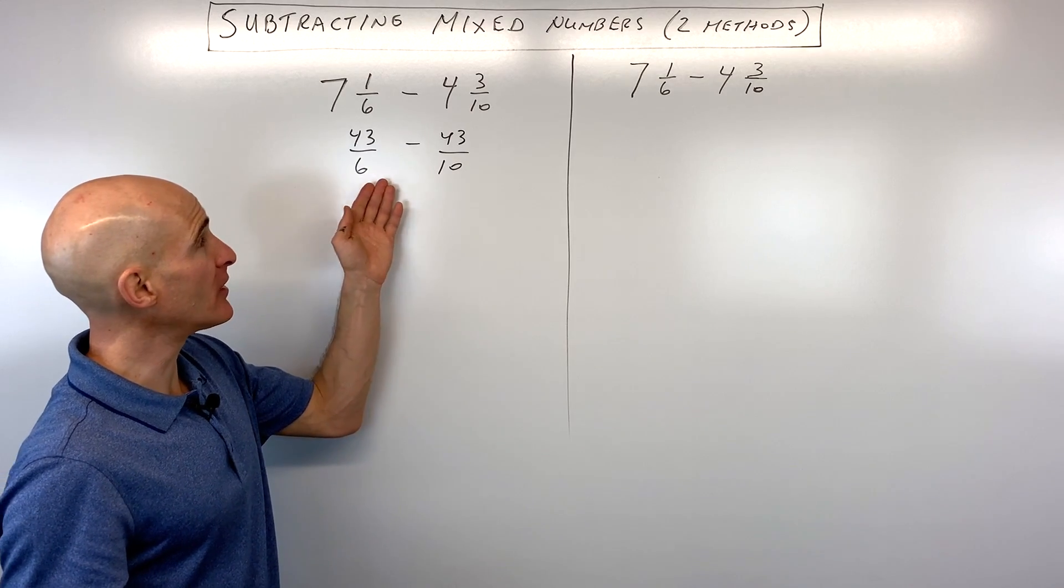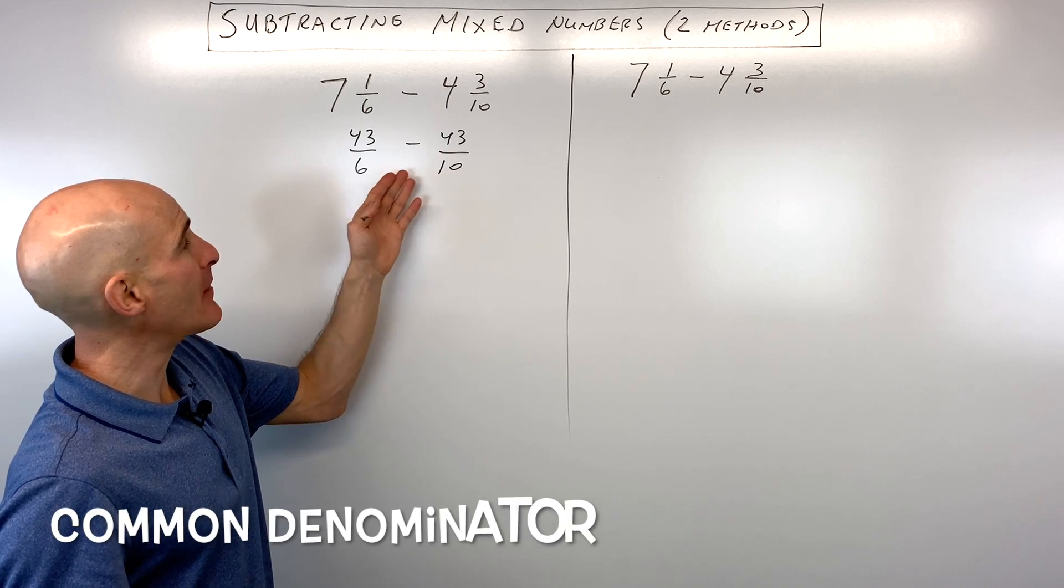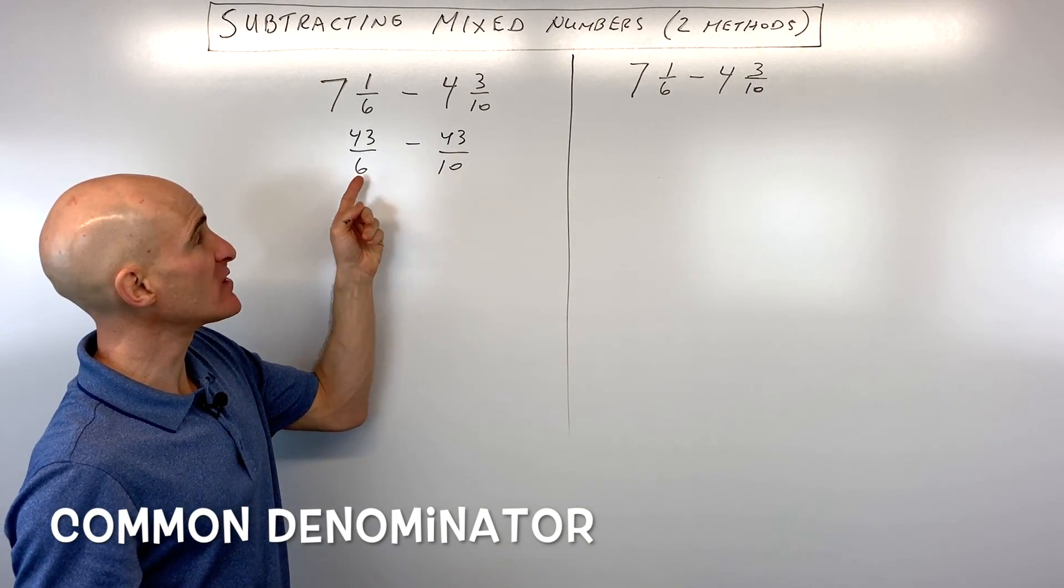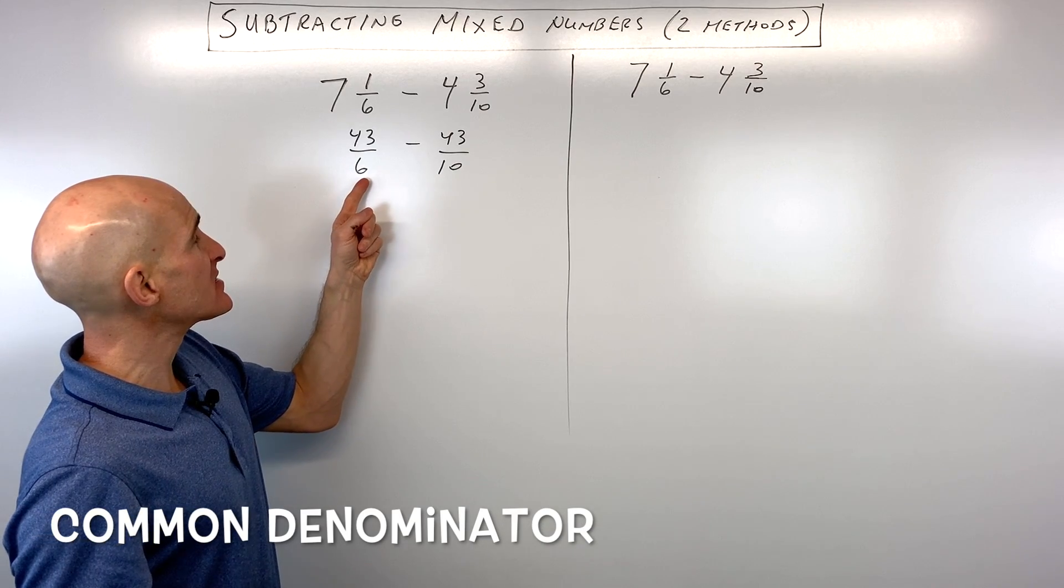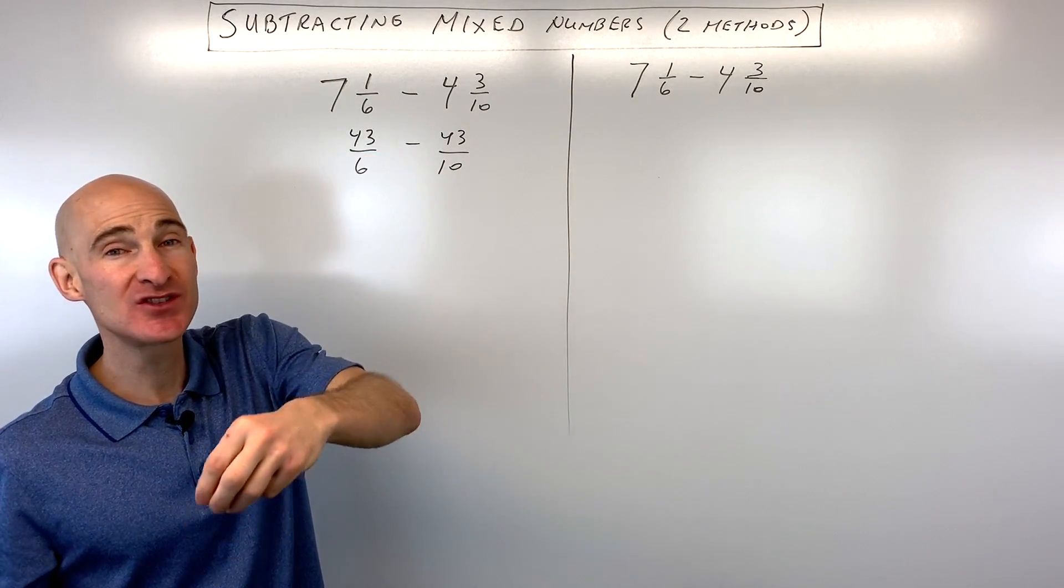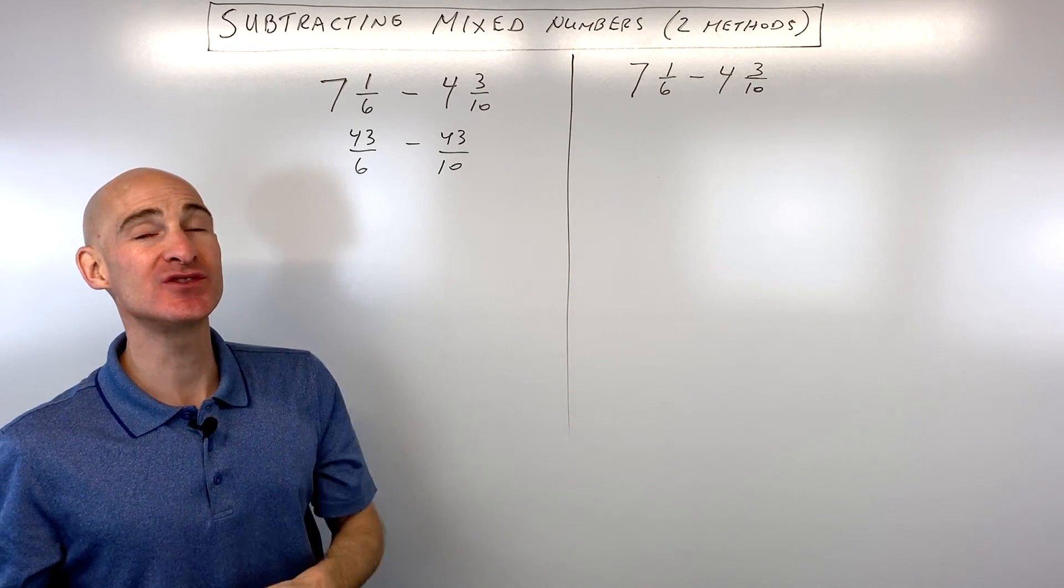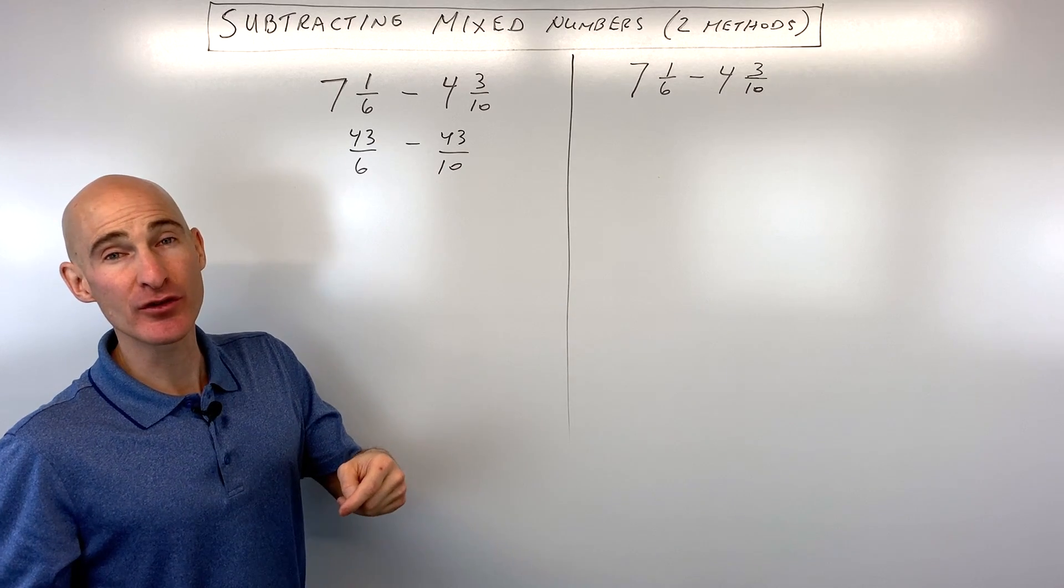So now we have both mixed numbers written as improper fractions. And so what we're going to do is we're going to find a common denominator. So we want this denominator to be the same whenever you add or subtract two fractions. So the key is, if you can, try to find the smallest number that 6 goes into evenly and 10 also goes into evenly. So in this case, we can see that 6 goes into 30 and 10 goes into 30.